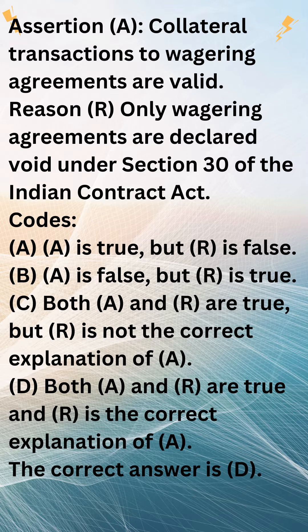The correct answer is D. Assertion A is true — collateral transactions to wagering agreements are valid. This means that contracts that are incidental to a wagering agreement, but are not themselves wagering agreements, are enforceable.